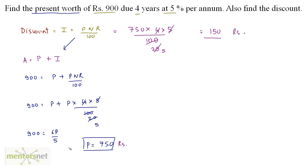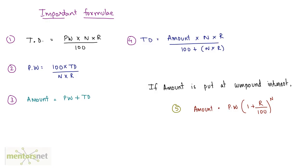Let us look at a couple of important formulas. Formula 1: True Discount = P×N×R/100 (simple interest on present worth). Formula 2: Present Worth = 100 × TD / (N×R). Formula 3: Amount = Present Worth + True Discount. Formula 4: By substituting Formula 2 into Formula 3, True Discount in terms of amount = Amount × N × R / (100 + N×R).